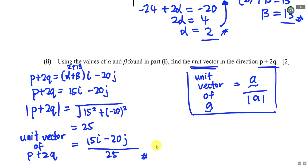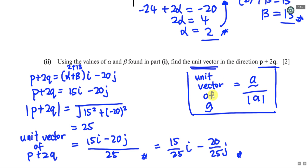So the unit vector of p + 2q equals (15i - 20j) / 25. You can also write this as (15/25)i - (20/25)j. Both forms should be accepted. Just remember the formula for unit vector and use Pythagoras for the magnitude — it finds the length of the hypotenuse, using a² + b², then square-rooting.